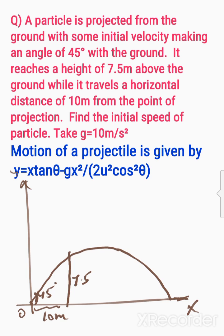Find the initial velocity of the particle, initial velocity U. Take g equals to 10 meters per second square.